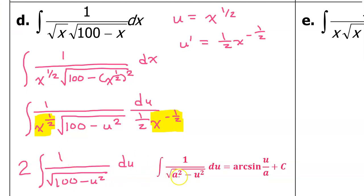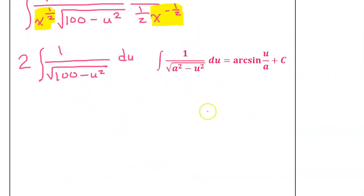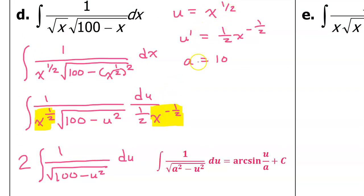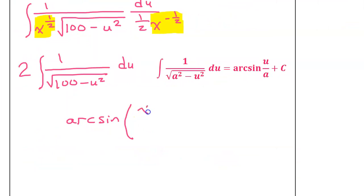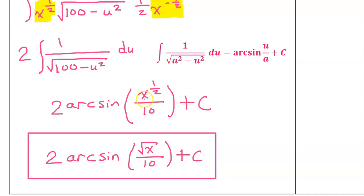This is a perfect match for the arcsine rule with an a value of 10 — the a value is the square root of the constant. There is no 1 over a in front of this rule, so we go straight into arcsine of u over a. U is x to the one-half power, so we write x to the one-half power over 10 plus c. Don't forget about the 2 in front of the integral. Putting x to the one-half power back as a square root gives us the final answer.